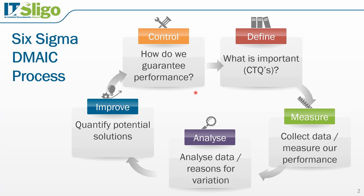Any deterioration in the process performance should be rapidly detected and a plan put in place to quickly get to the root cause of the problem. In this phase we will illustrate the use of control charts to monitor the critical metrics of the process, and show how these charts can distinguish between common cause and special cause variation.